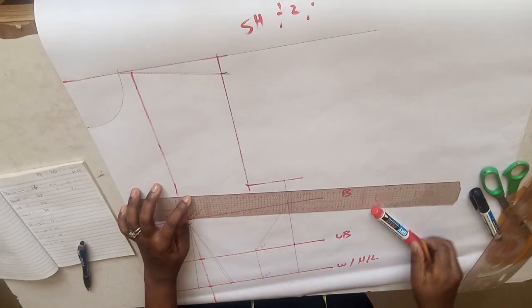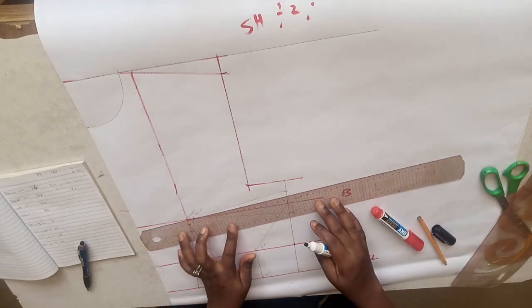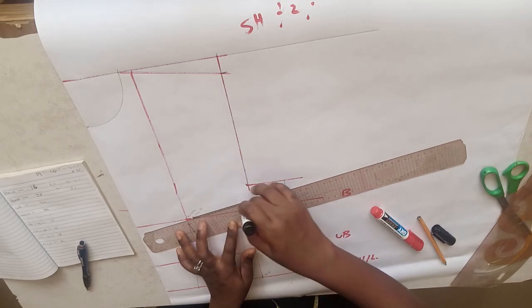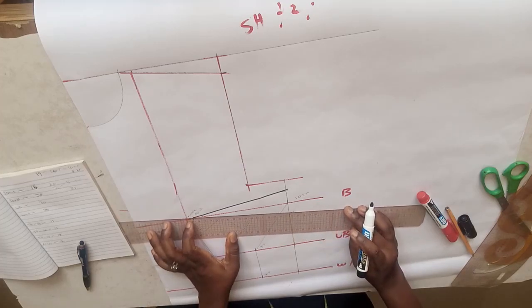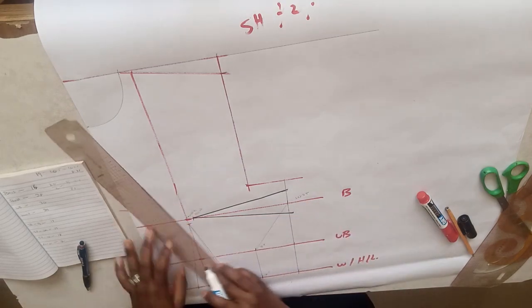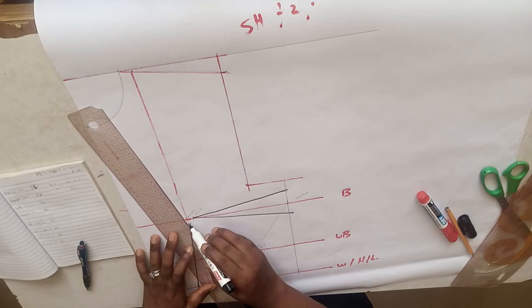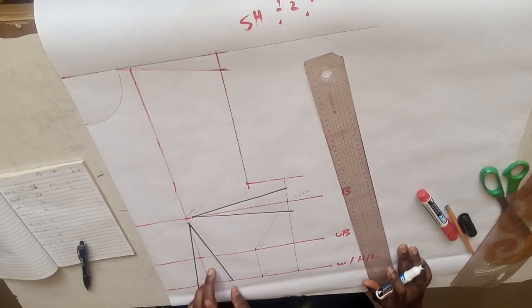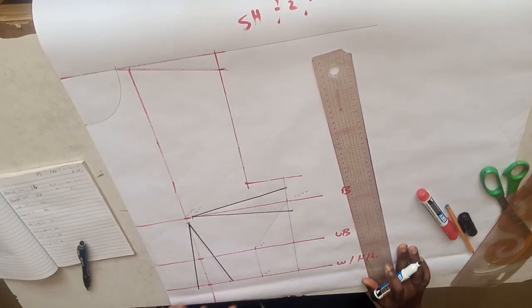Let me highlight the dart with a black marker so it's clearly visible. This is our waist dart and this is our bust dart.